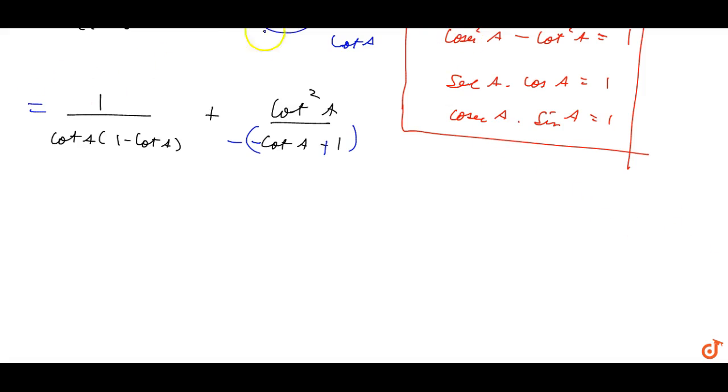This becomes 1 upon 1 minus cot A minus cot square A upon 1 minus cot A.